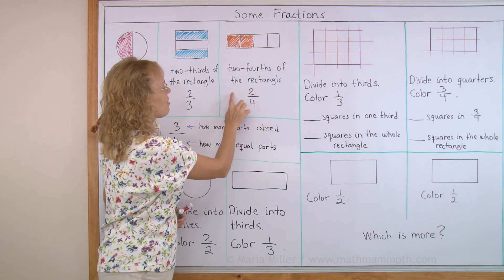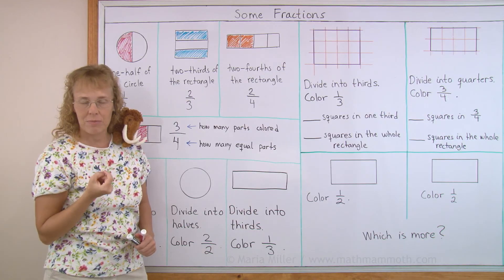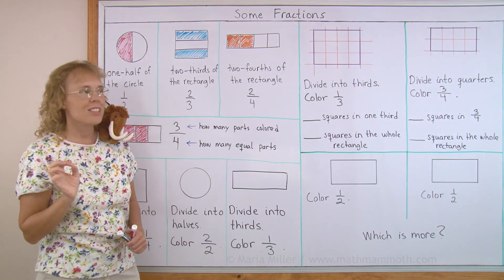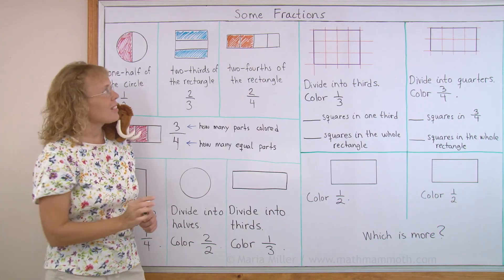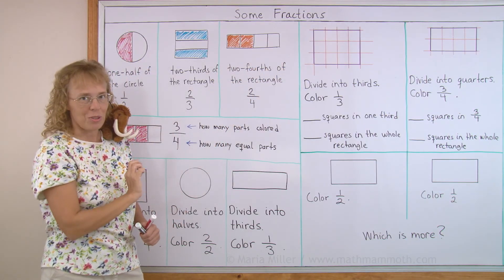And over here, look at this fraction, two and four here, we read it as two fourths or two quarters. And the four means there are four equal parts. And then two are colored, two fourths.